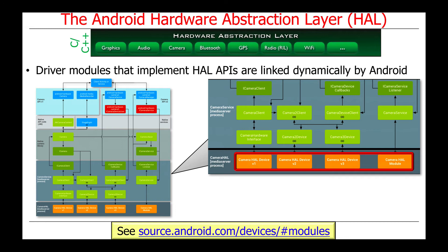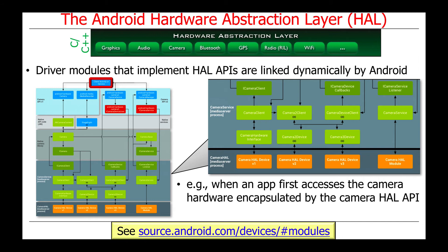The device driver modules that implement these HAL APIs are linked dynamically into a program or service by the Android operating system. Dynamic linking is a very important capability that makes it possible to load object code and various other resources on demand as the services are accessed, so they don't actually take up any space until they're actually used. This happens when an application first accesses the camera hardware encapsulated by the camera HAL API. That's when it's brought into memory — you don't pay any real cost in terms of runtime overhead until something's actually used. That's a just-in-time optimization.